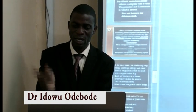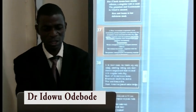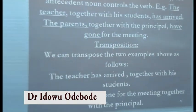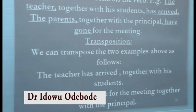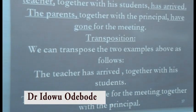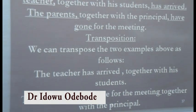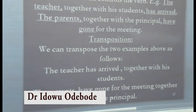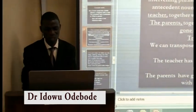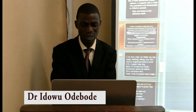That's why we say: 'The parents, together with the principal, have gone for the meeting.' Notice that 'the parents' is the first nominal element, so even though 'the principal' is close to the verb, the parents — as the antecedent noun — controls the verb. By transposition: 'The parents have gone for the meeting together with the principal.'